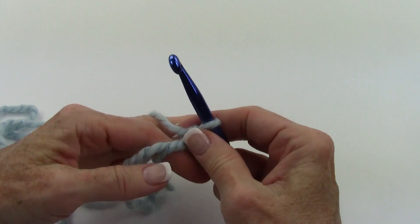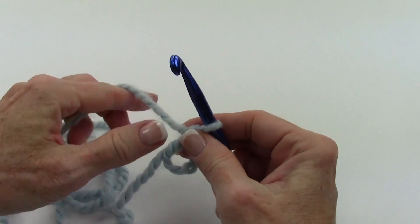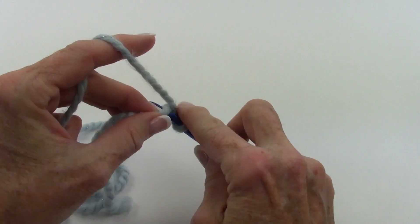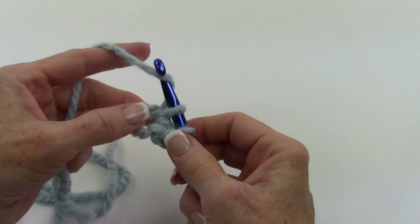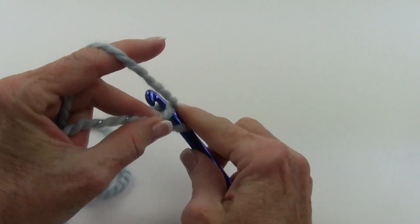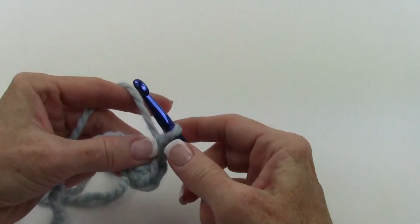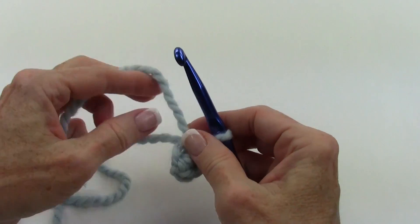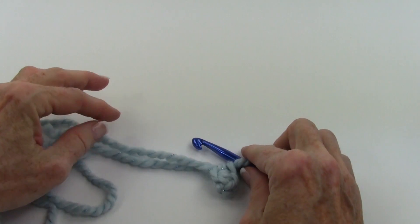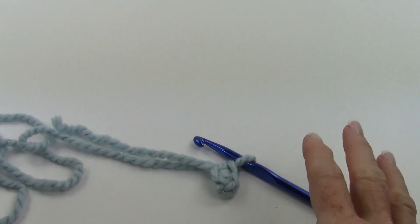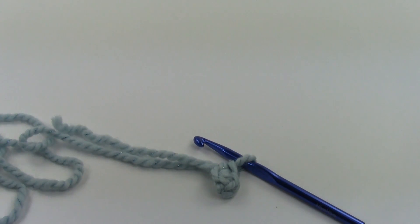And at this point I can take it off of my hand and continue on. If I want to do a single, I would do that, and then I can always pull. So that's how you do the magic circle, or sometimes it's called the magic ring. Thank you for watching.